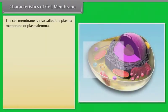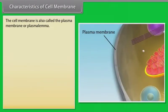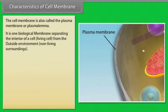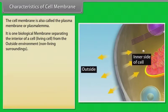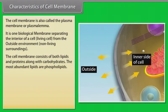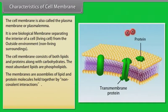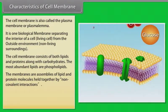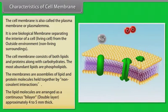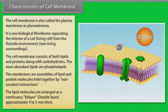Characteristics of cell membrane. The cell membrane is also called the plasma membrane or plasmalemma. It is one biological membrane separating the interior of a cell — that is, a living cell — from the outside environment, that is, non-living surroundings. The cell membrane consists of both lipids and proteins along with carbohydrates. The most abundant lipids are phospholipids. The membranes are assemblies of lipid and protein molecules held together by non-covalent interactions. The lipid molecules are arranged as a continuous bilayer, that is a double layer, approximately 4 to 5 nm thick.